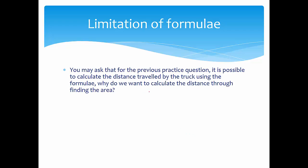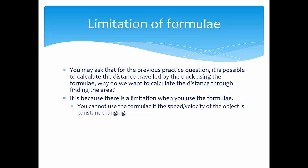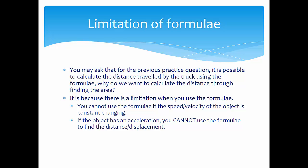You may ask why we go through the trouble of finding the area under the velocity-time graph instead of just using the formula. It is because there is a limitation: you cannot use the formula if the speed or velocity is constantly changing — that is, whenever the object has an acceleration, you cannot use the distance formula. You can only use the formula if the velocity is uniform, meaning a flat line on the velocity-time graph.